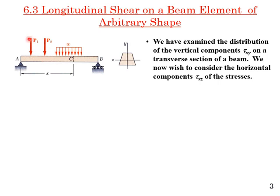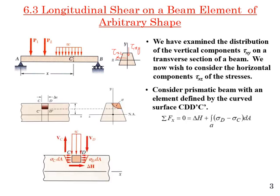Coming back to the simply supported beam A–B with point loads P1, P2, and distributed load — this is a cross section of the beam. Previously we examined the vertical component tau_xy on the transverse section. Now we wish to find the horizontal component tau_xz, which is important for thin structures.